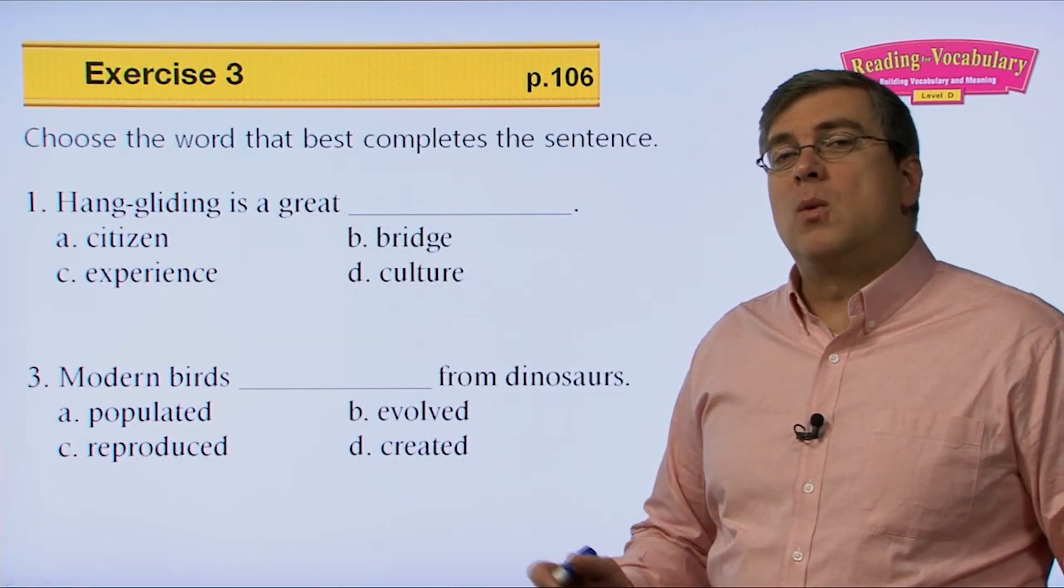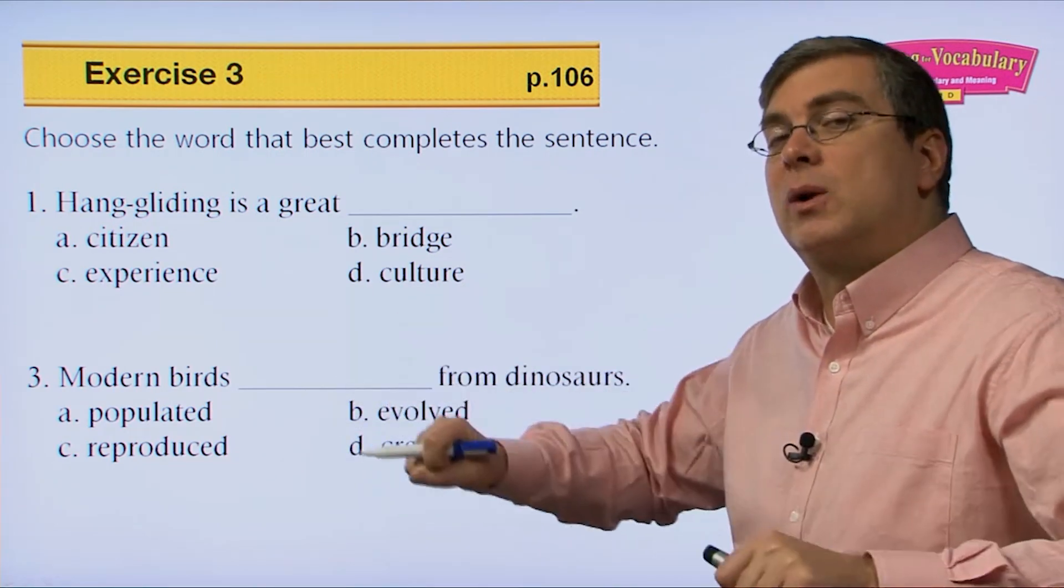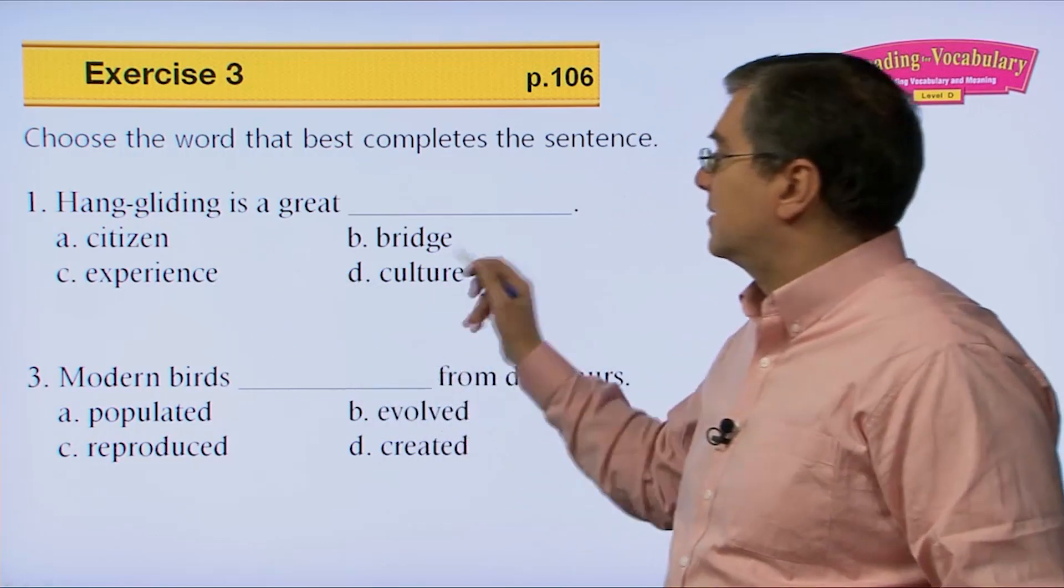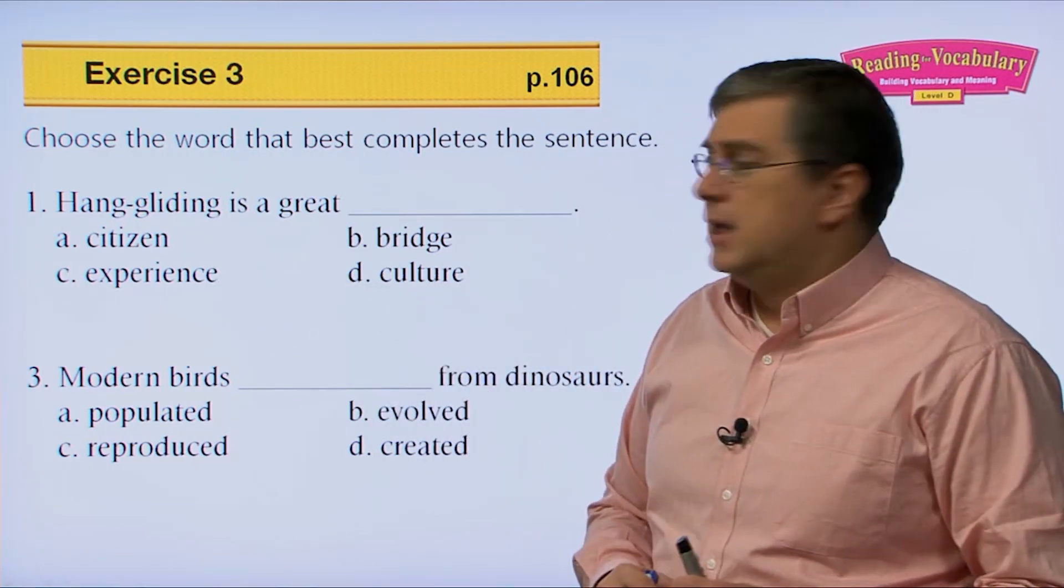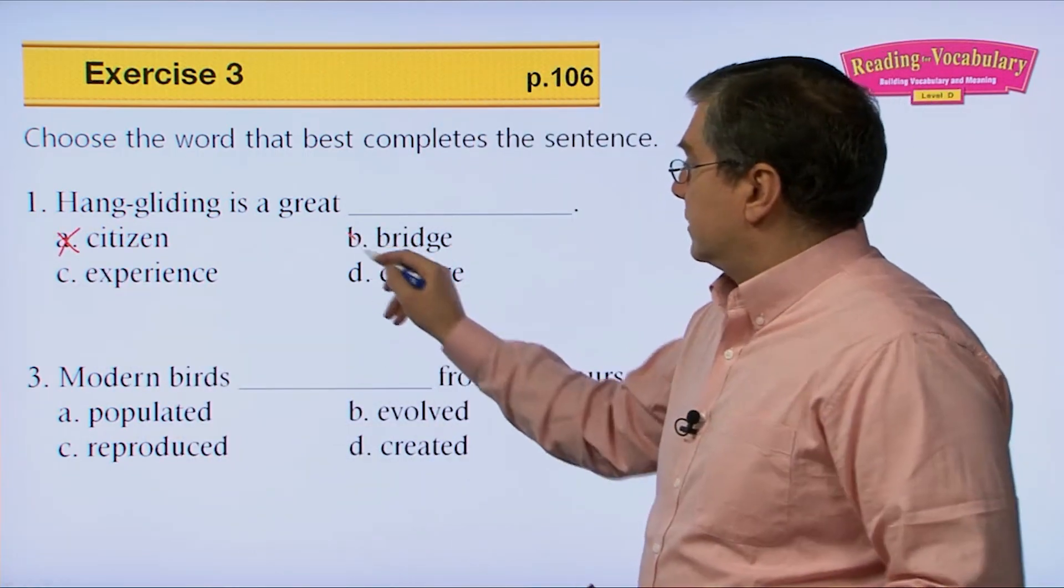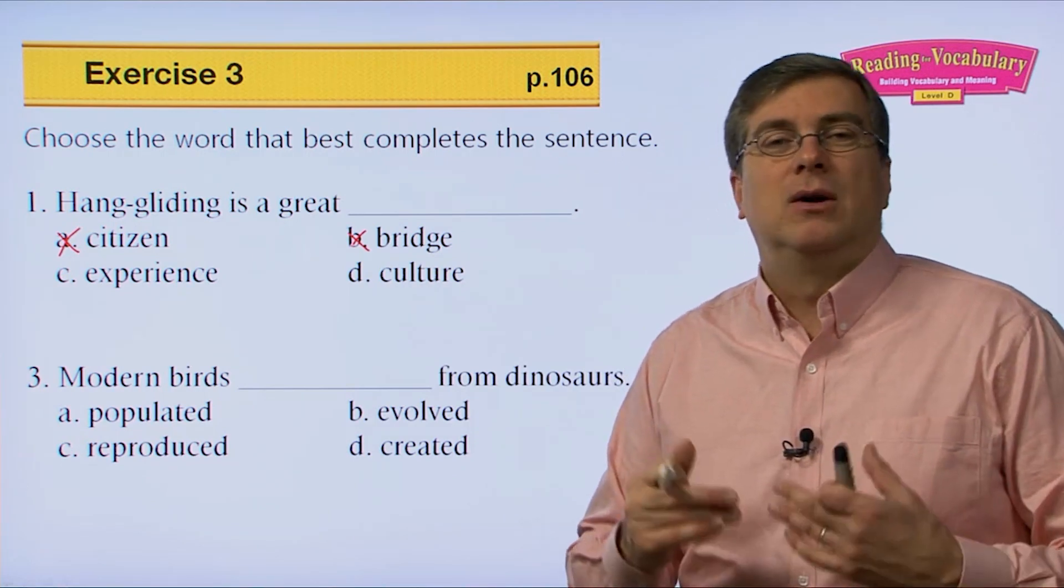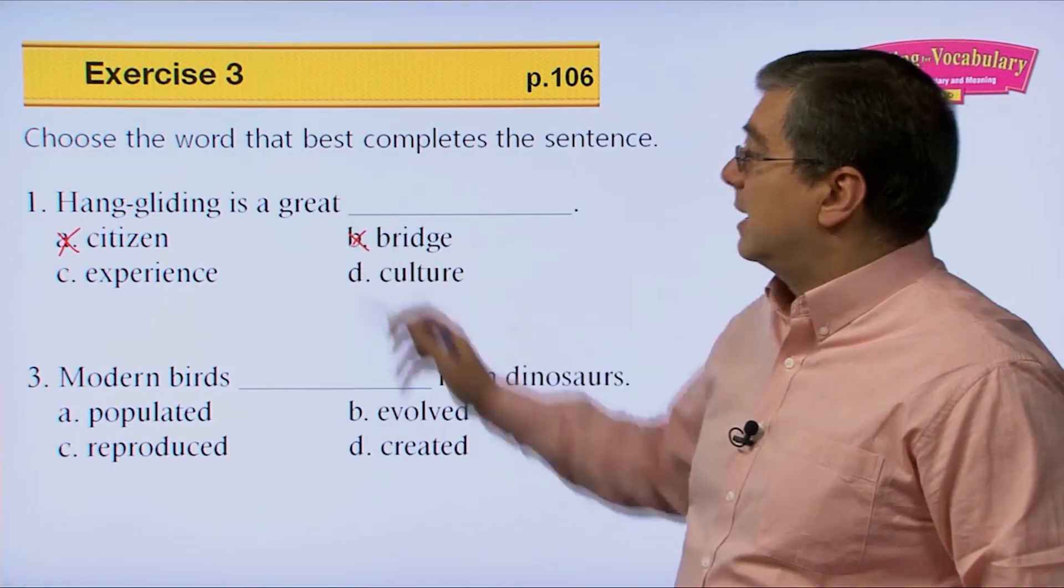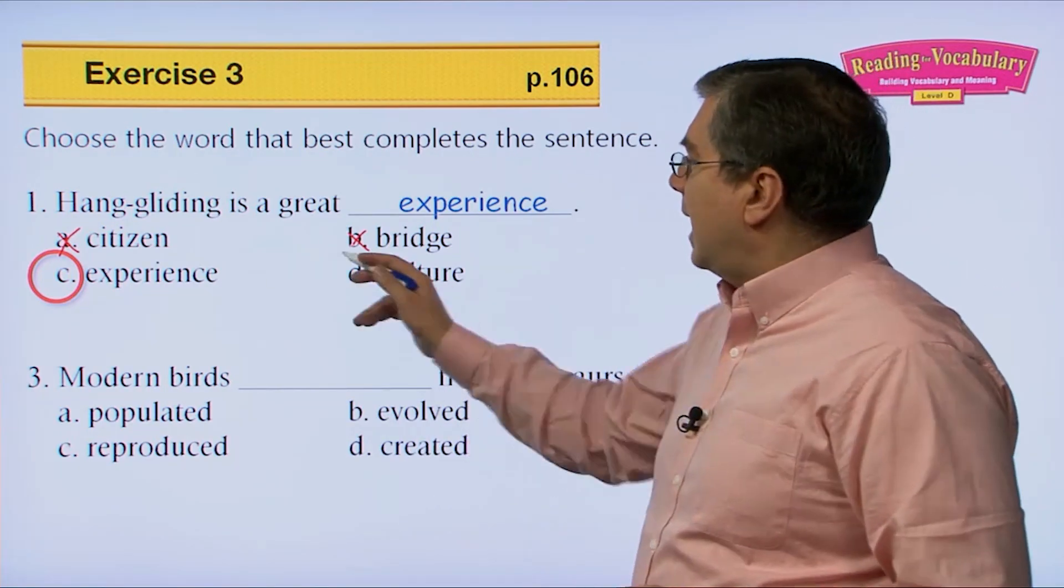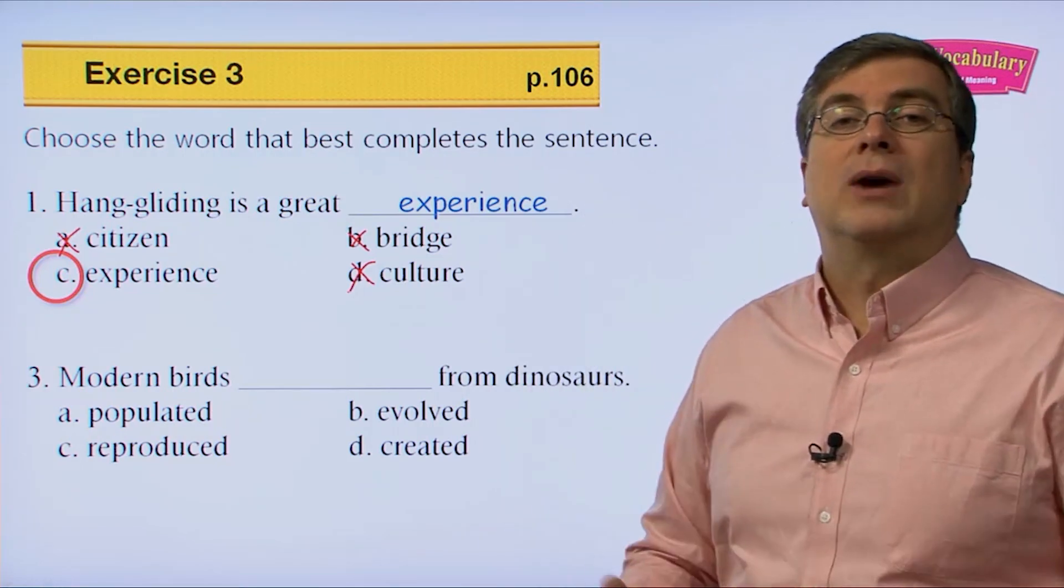Let's go over the words and see how well you remember the vocabulary. Number one. Hang gliding. Remember hang gliding from a previous lesson? That's where you're flying, soaring through the air on the bar with a wing above you. Hang gliding is a great what? A. Citizen. B. Bridge. C. Experience. D. Culture. Which word fits? Well, is hang gliding a great citizen? It's a citizen of a country? That doesn't make sense. Is it a great bridge? That doesn't make sense either. Is it a great experience? Remember an experience is something that you remember. It's a memorable happening in your life. Something, an event or something that happens in your life. That's a great experience. So hang gliding is a great experience, isn't it?